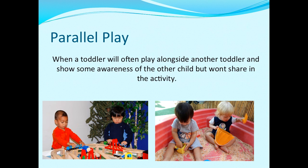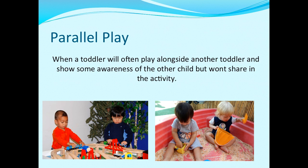In parallel play, as you can see in these pictures, children may very well be playing with exactly the same things — in the sand tray, on the construction table, at the train track — but they are playing independently. A child will often play alongside another child and show some awareness that the other child is there, but they won't share in each other's activities. They don't cooperate with each other; they tolerate each other. There might be some observation — they might look at each other — but they certainly don't share or cooperate.